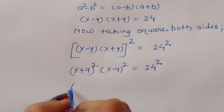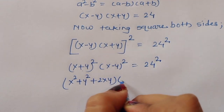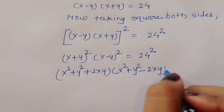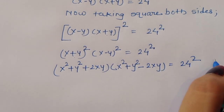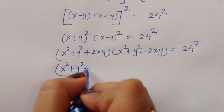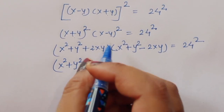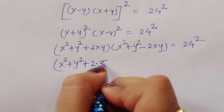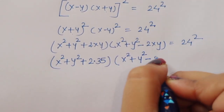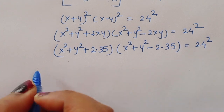Now expanding: x plus y whole square is x squared plus y squared plus 2xy, and x minus y whole square is x squared plus y squared minus 2xy. The value of xy is already given as 35, so we substitute: x squared plus y squared plus 2 times 35, times x squared plus y squared minus 2 times 35, equals 24 squared.